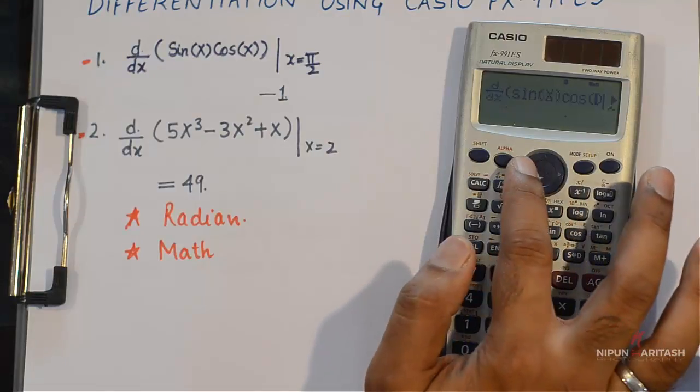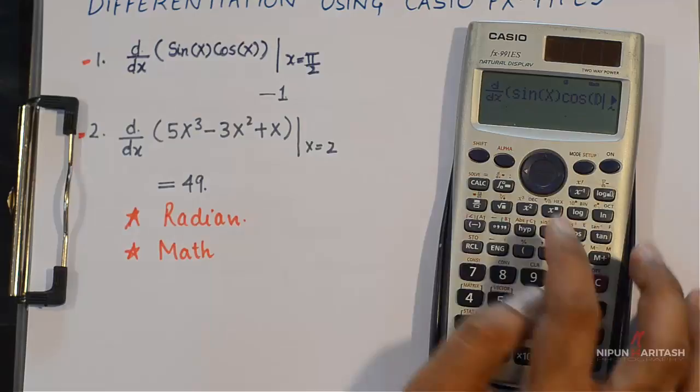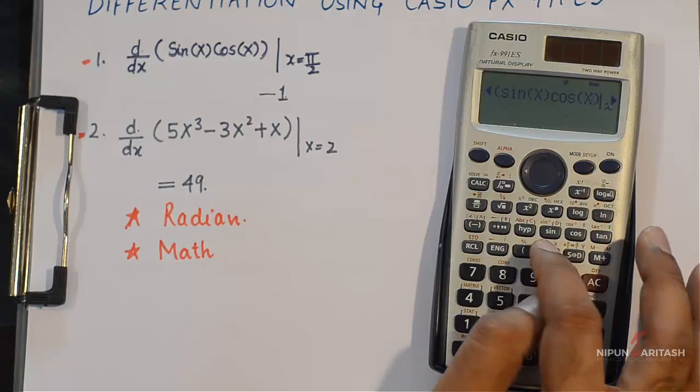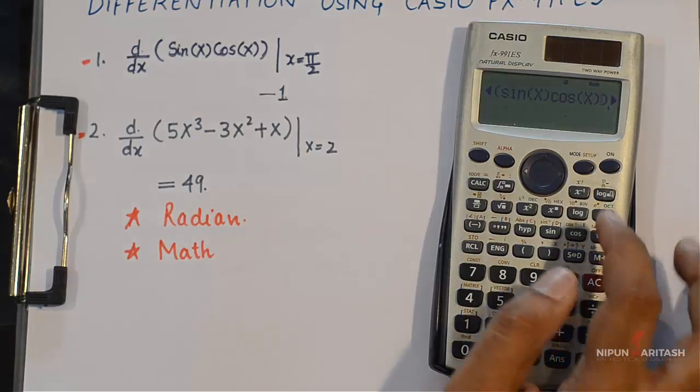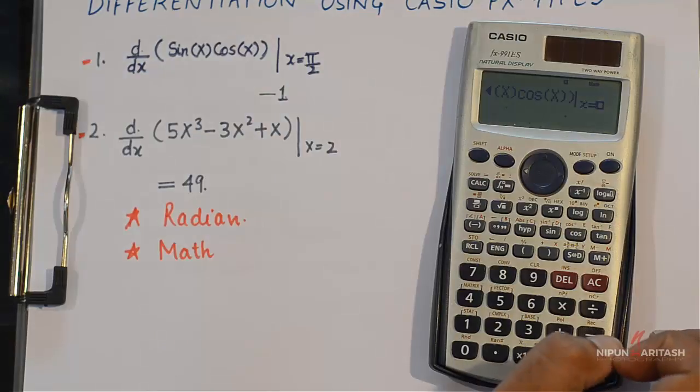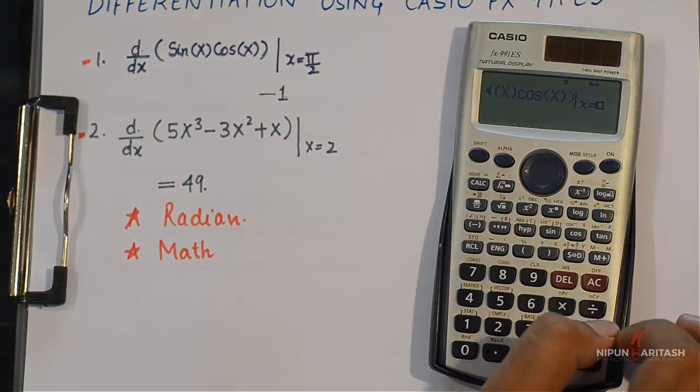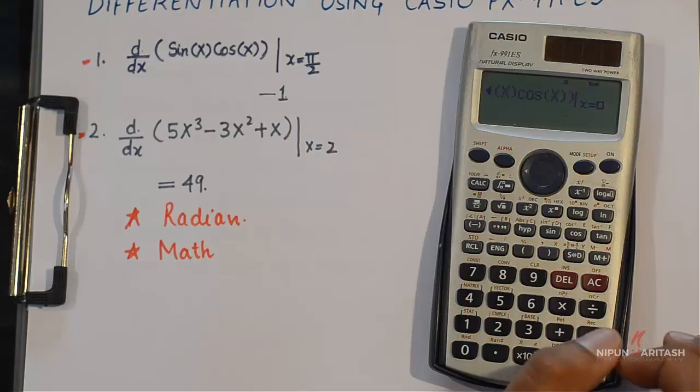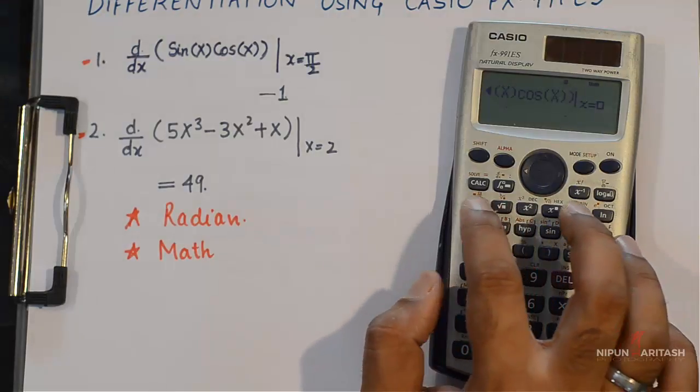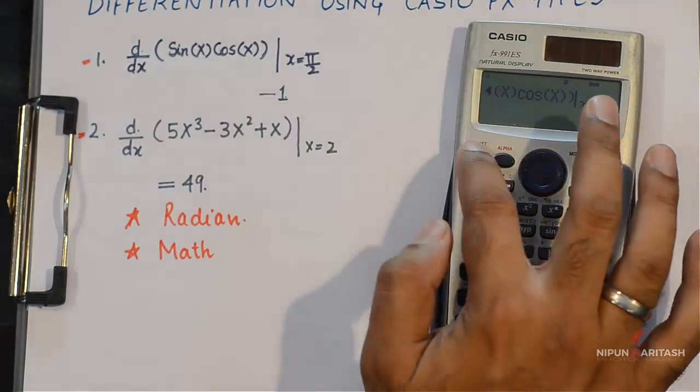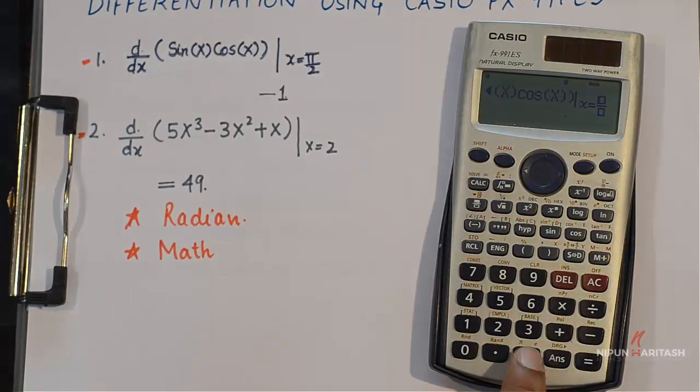And then a bracket. Now you need to press the right arrow to specify for which value of X you want to calculate this differentiation. We need to put pi by 2. For that press this button and then press shift and 10 raised to the power X which specifies pi as its alternate function.